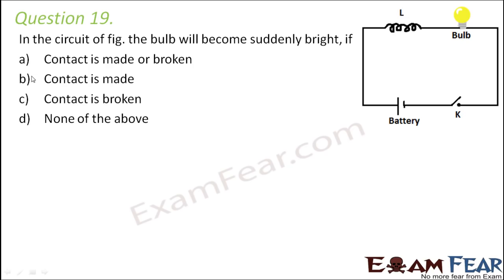When the contact is made, the main current flows through the circuit. During that time, the bulb glows but only with the main current. Note that there is an inductor in the circuit, so the inductor stores some energy in its magnetic field.